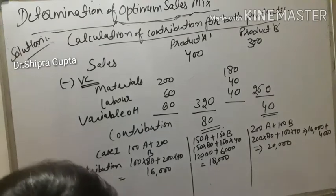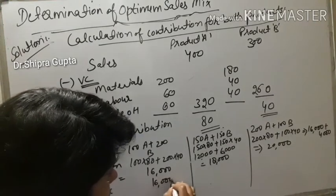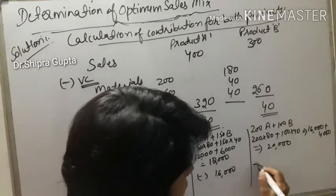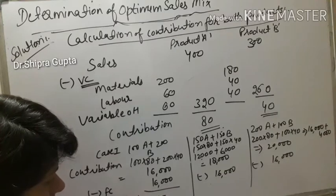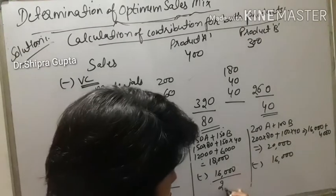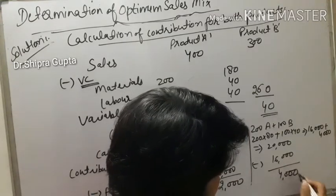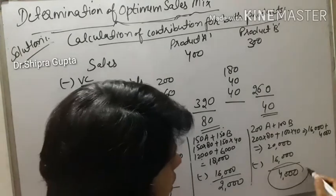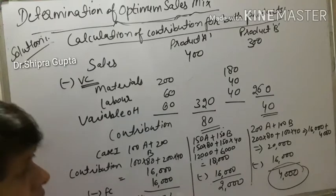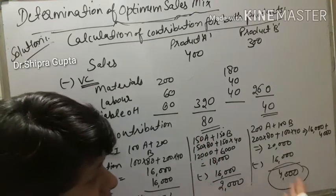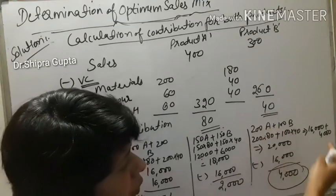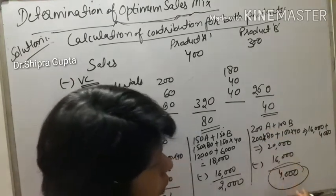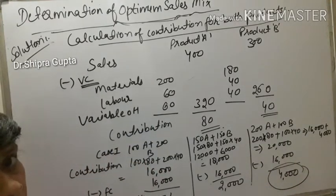Deducting fixed cost of Rs. 16,000 in each case: Case 1 net profit = nil (Rs. 0), Case 2 net profit = Rs. 2,000, Case 3 net profit = Rs. 4,000. Since Rs. 4,000 net profit is greater than the other alternatives, we should accept the sales mix of Case 3, which is 200 units of A and 100 units of B, as its net profit is greater than other alternatives.